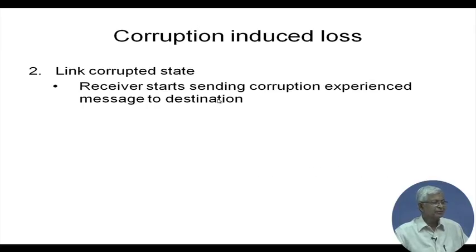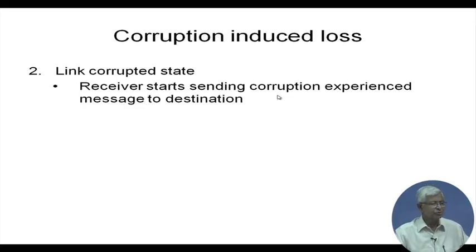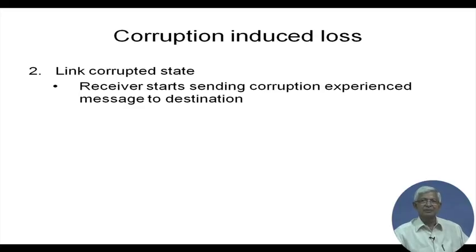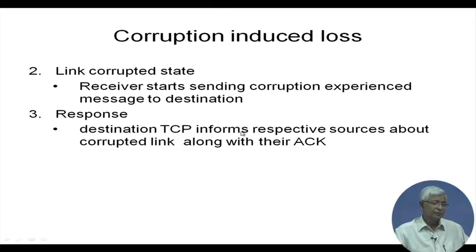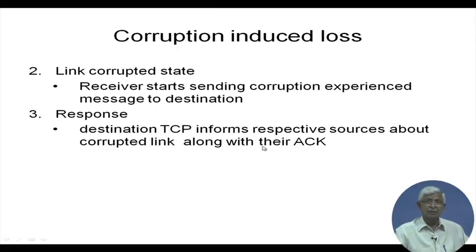In the link corrupted state, the receiver starts sending a special message — a type of internet control message — to the destination, indicating that corruption has been experienced. The destination, in response, informs the TCP source that the link is corrupted, sending that information along with the acknowledgement.